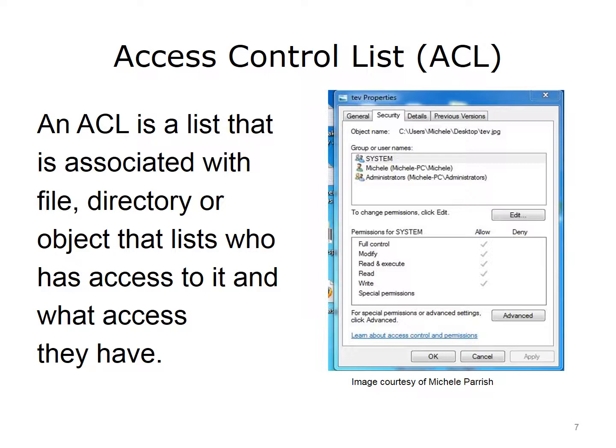An access control list, ACL, is a list that is associated with a file, directory, or object that lists who has access to it and the type of access. ACLs are created by the owner of the object. On the slide, you see the ACL for the file named tev.jpg. There are three objects that have access to the file: system, Michelle, and administrators. System and administrators are group accounts. Michelle is a user account. The ACL shows the permissions or access that system has to the file. The checks indicate what permissions the object has. All users that are part of a group will inherit the permissions that are given to that group. Access control is easier to administer through groups than individual user accounts.